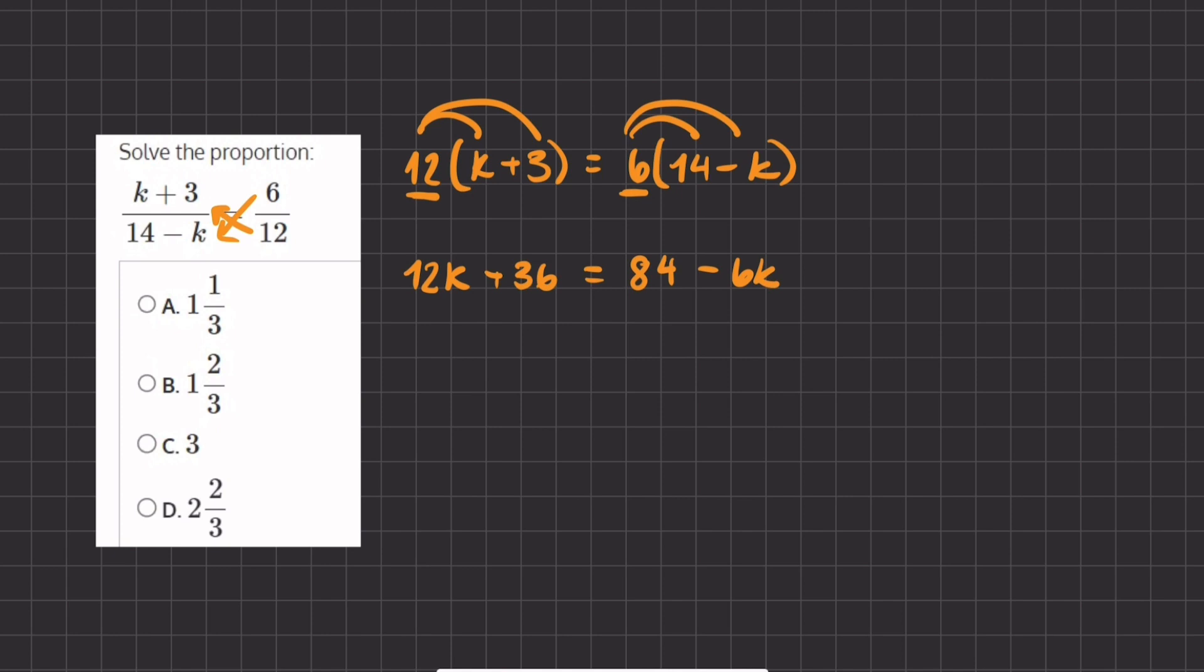Now let's move all of our k's to the left-hand side and all of our numbers to the right-hand side. We're going to add 6k to both sides, and we are going to subtract 36 on both sides.